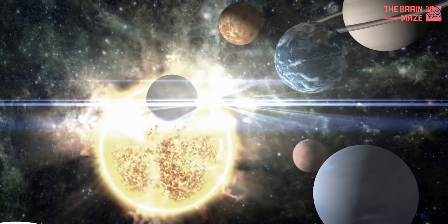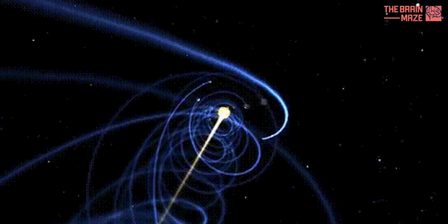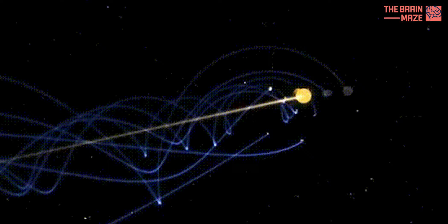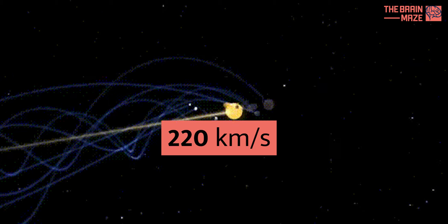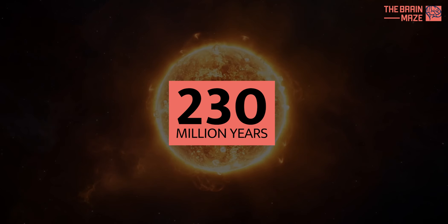Our Sun, along with its planetary family, is on a cosmic roller coaster. It's orbiting the center of the Milky Way at a breathtaking speed of about 220 kilometers per second. This journey takes an incredible 230 million years to complete a cosmic year.